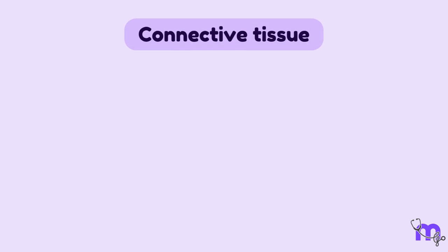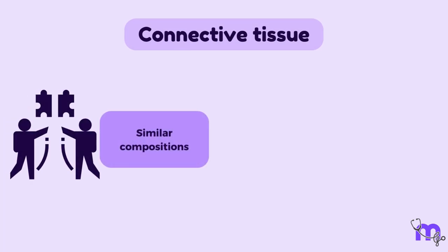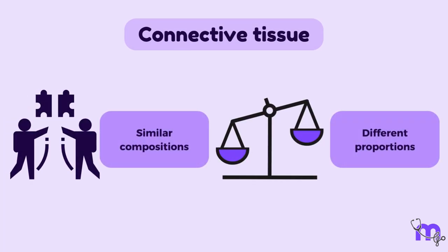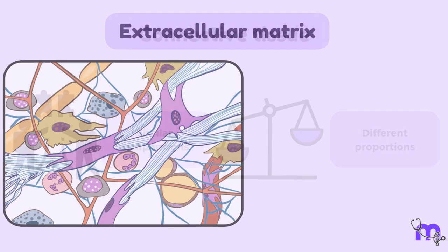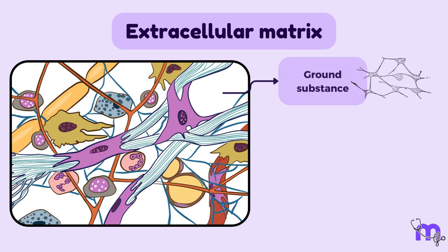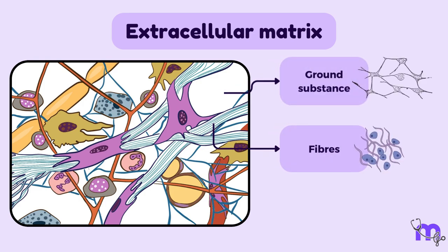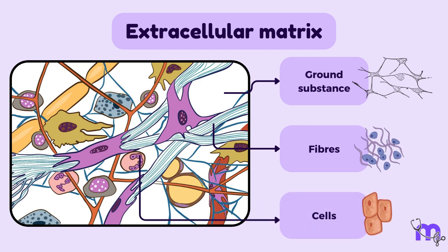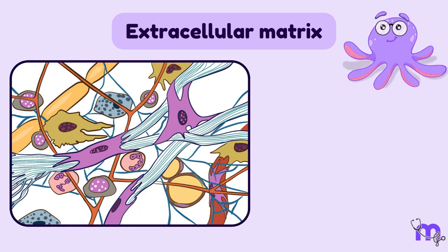All types of connective tissue have a similar composition but in different proportions. The two main components are the extracellular matrix, which is made up of ground substance and fibers, and cells. Let us now talk about the extracellular matrix.